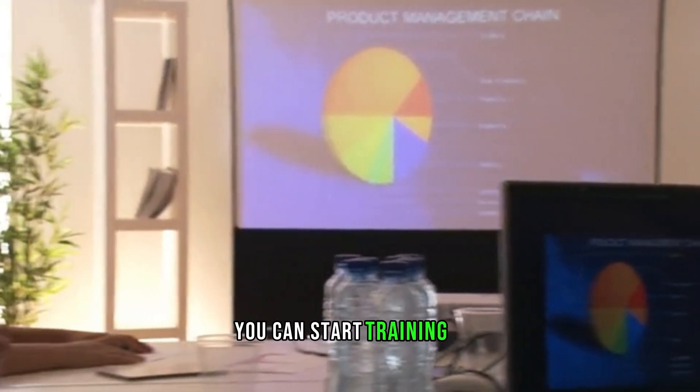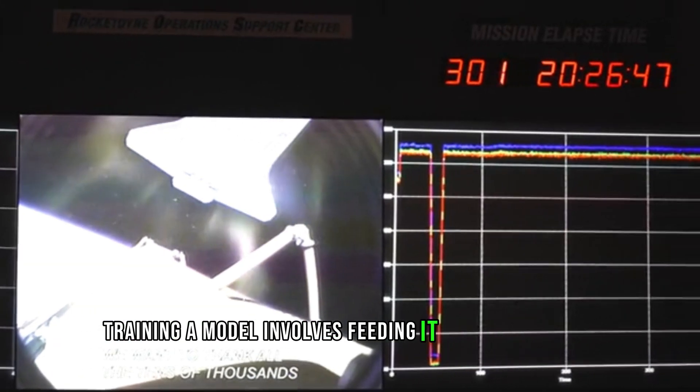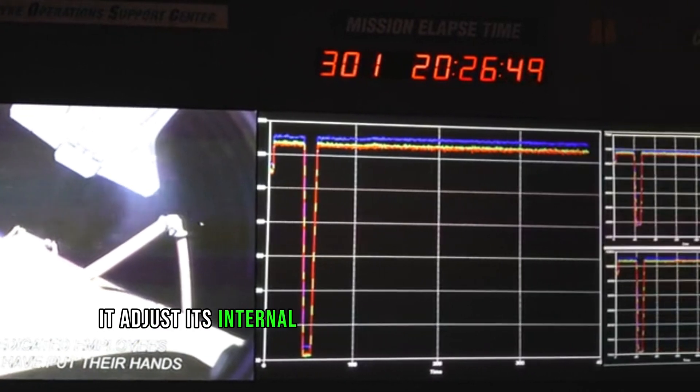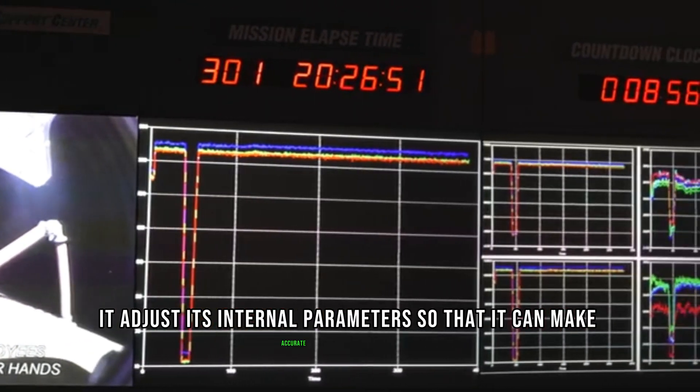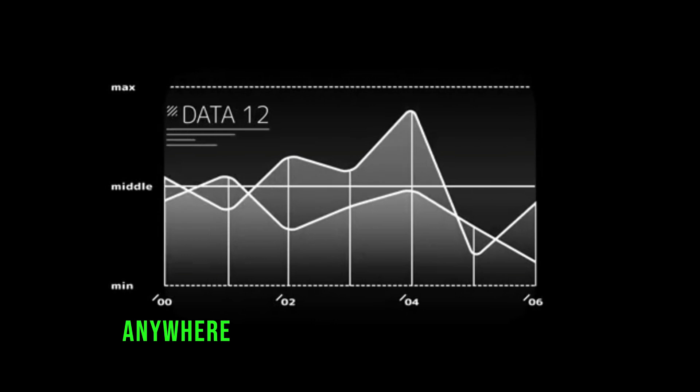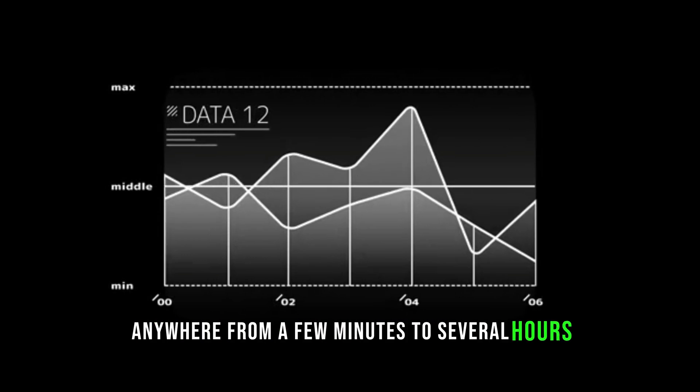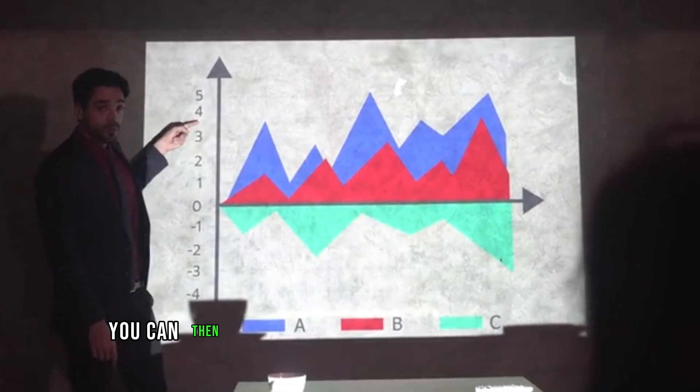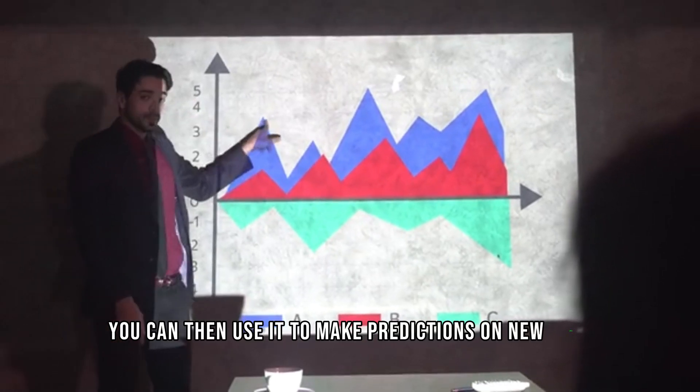Training a model involves feeding it data and letting it adjust its internal parameters so that it can make accurate predictions. The process of training can take anywhere from a few minutes to several hours, depending on the size of your model and the amount of data that you're training it on. Once the model has been trained, you can then use it to make predictions on new data.